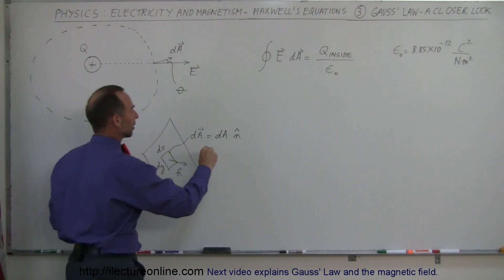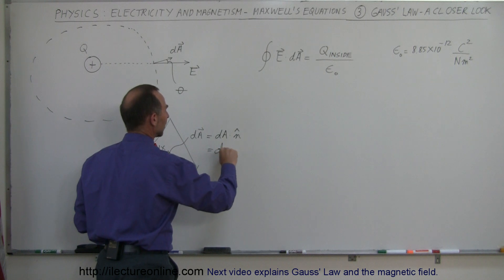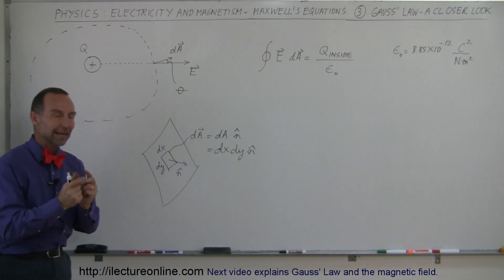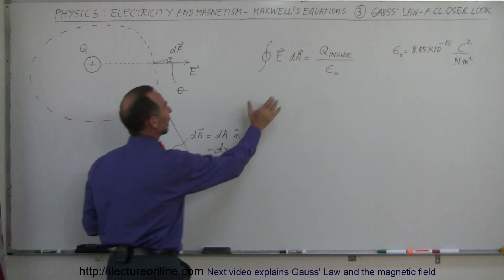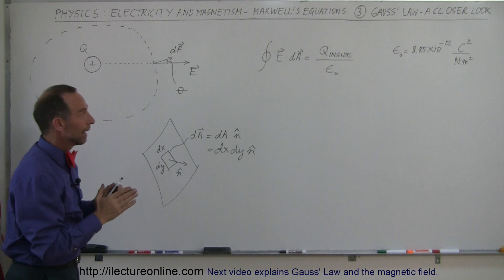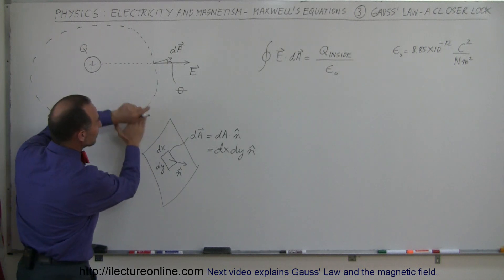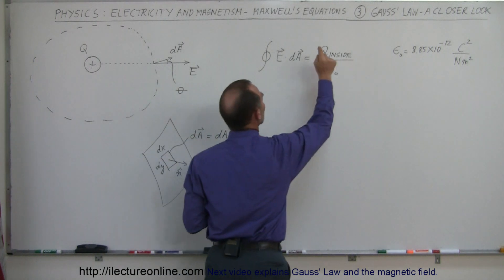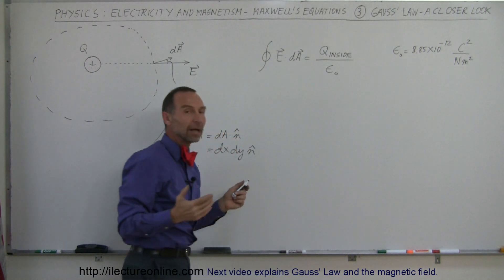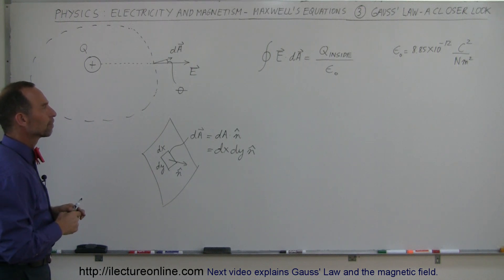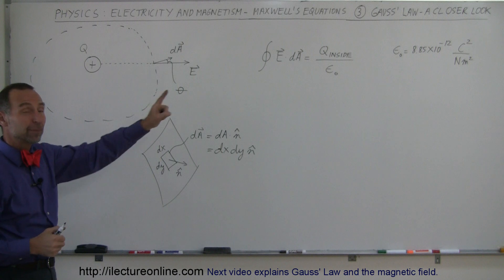So we can say that this area element can be written as dx times dy times the normal vector. If we then multiply that with a dot product with the strength of the electric field and integrate over the entire surface, that integral should always equal the charge inside divided by epsilon sub nought, where epsilon sub nought is the permittivity of free space. That's very, very powerful.